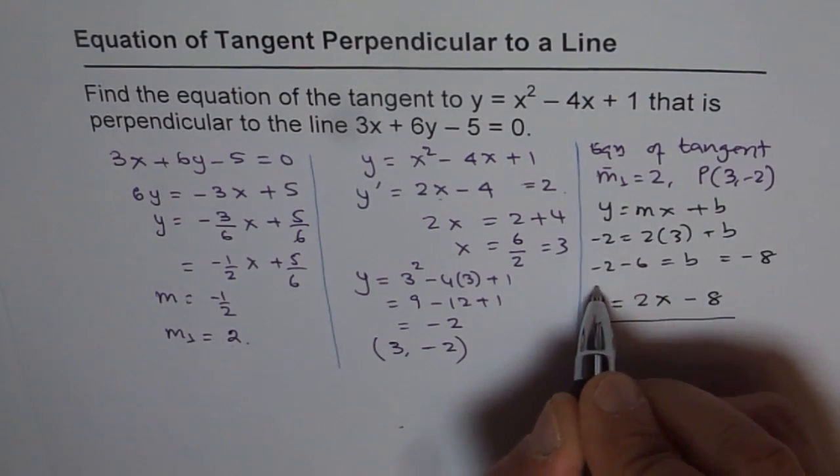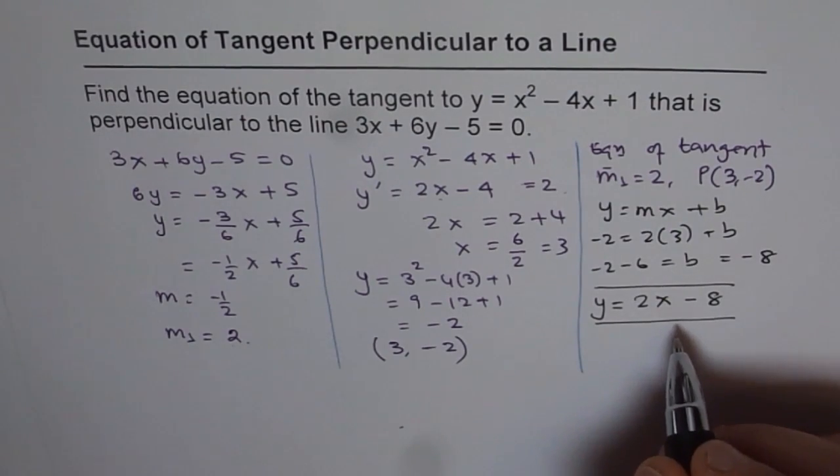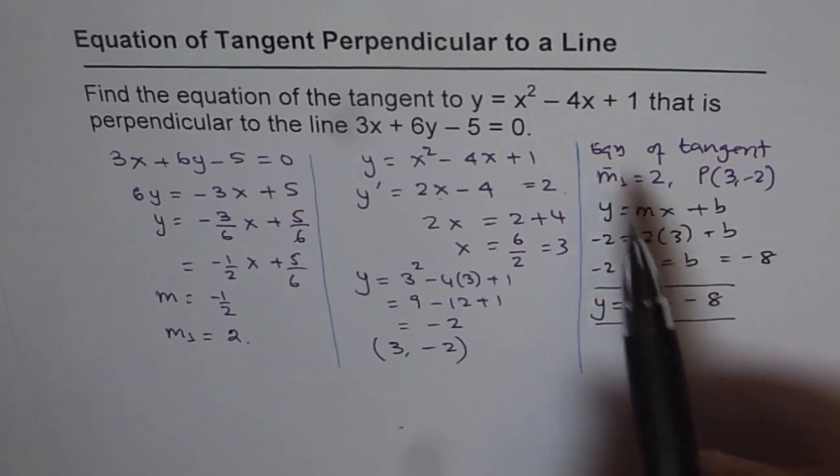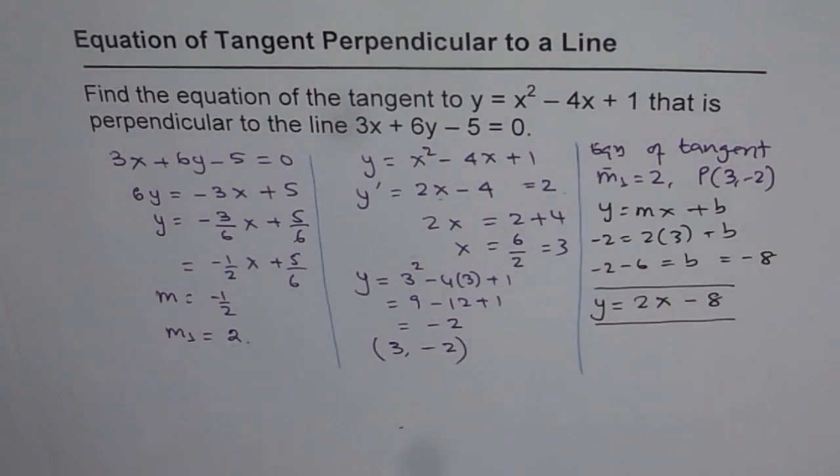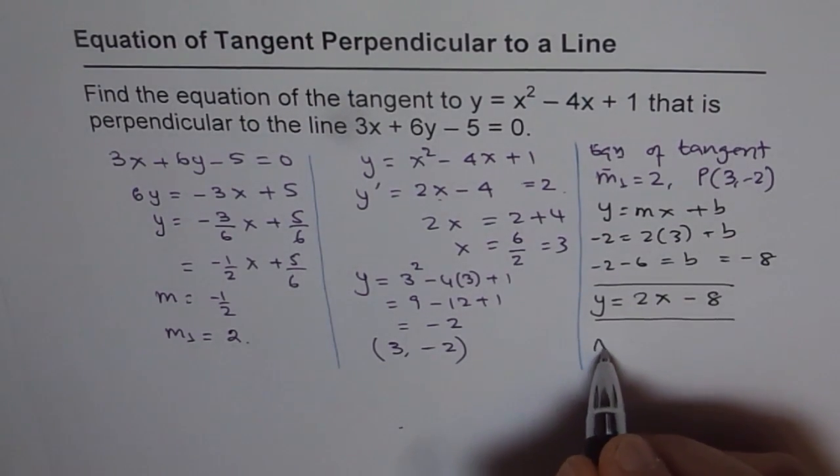So that is our answer. This is the equation of the tangent line to the given curve y = x² - 4x + 1, which will be perpendicular to the line 3x + 6y - 5 = 0.